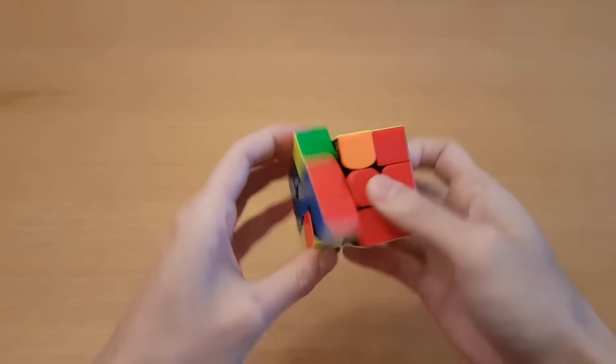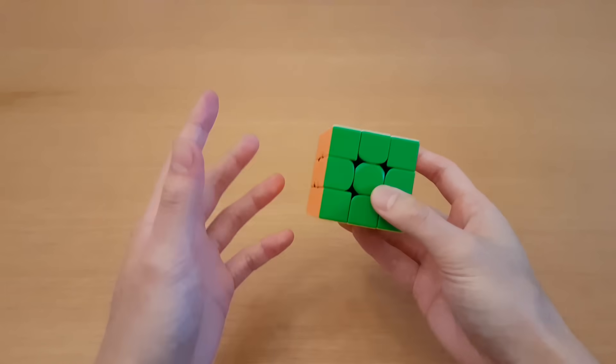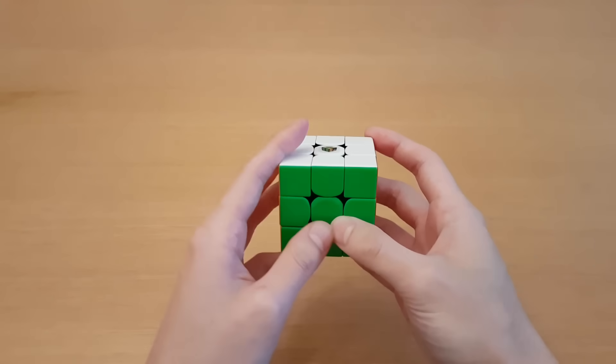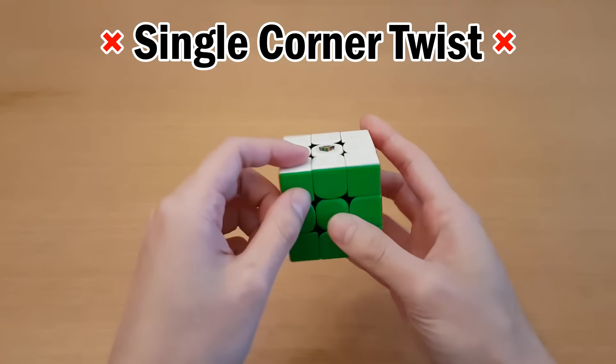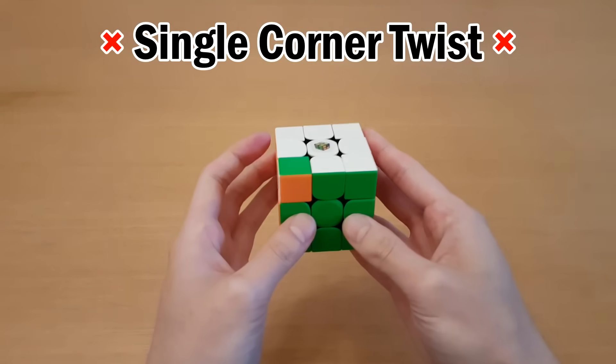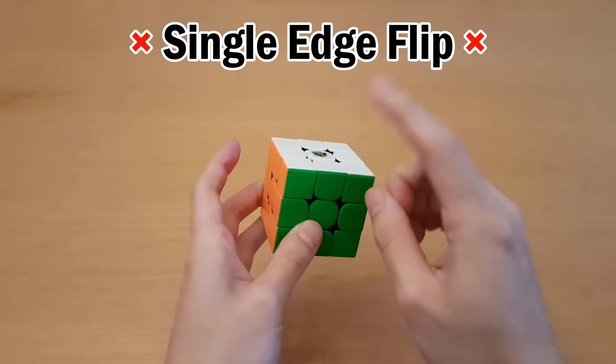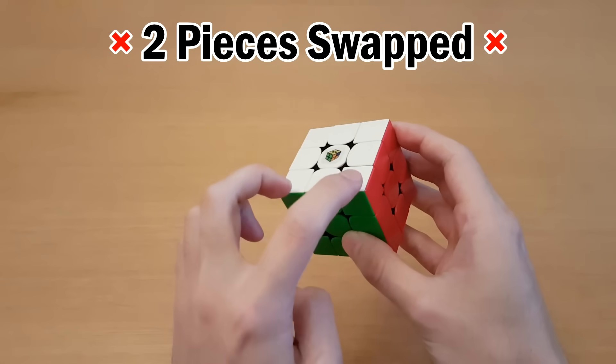So just to show you what I mean, here are two swapped edges, and that's not supposed to be possible. In that solve, I ran into three things that were impossible to solve just by turning the cube normally. First thing is, it's impossible to have one corner twisted and no other corners twisted. The same thing applies for edges, you cannot just have one edge flipped. And the last thing is, you cannot just have two pieces swapped.